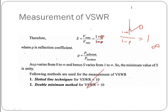The reflection coefficient rho is defined as the power reflected upon power incident — that means what power is reflected by the load and what power is incident from the source. As rho varies from 0 to 1, S varies from 1 to infinite. The minimum value of S is unity, corresponding to the perfectly matched condition where rho equals 0, giving 1 plus 0 divided by 1 minus 0, which equals 1.